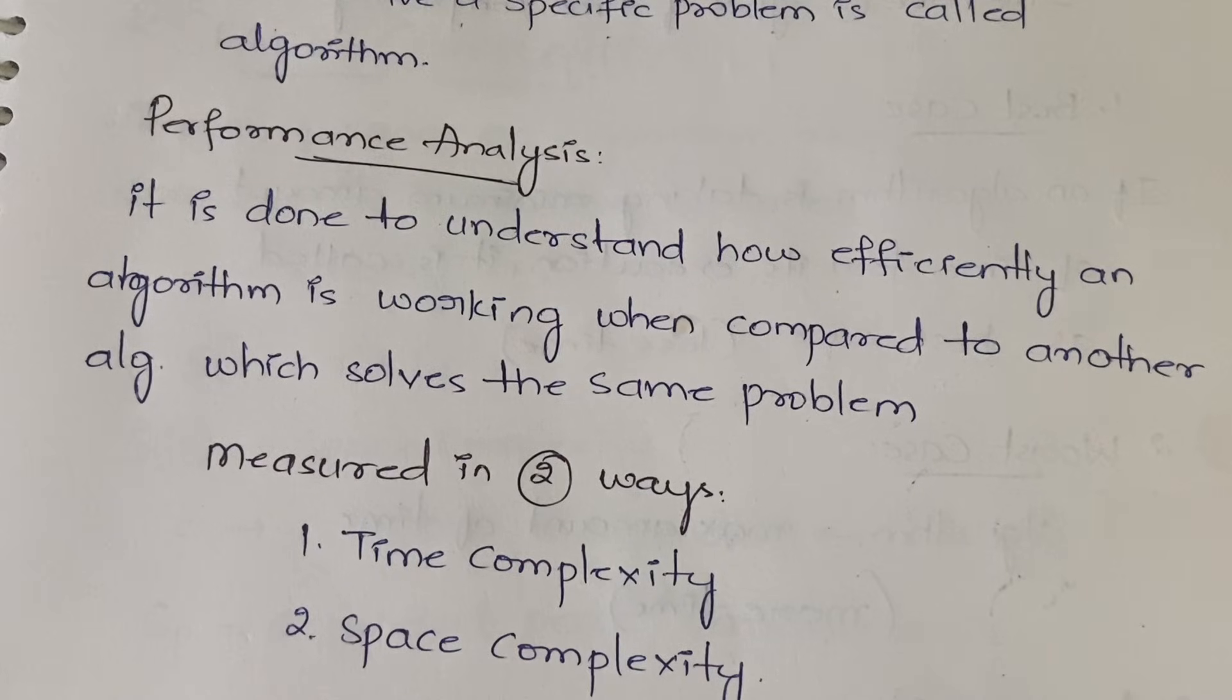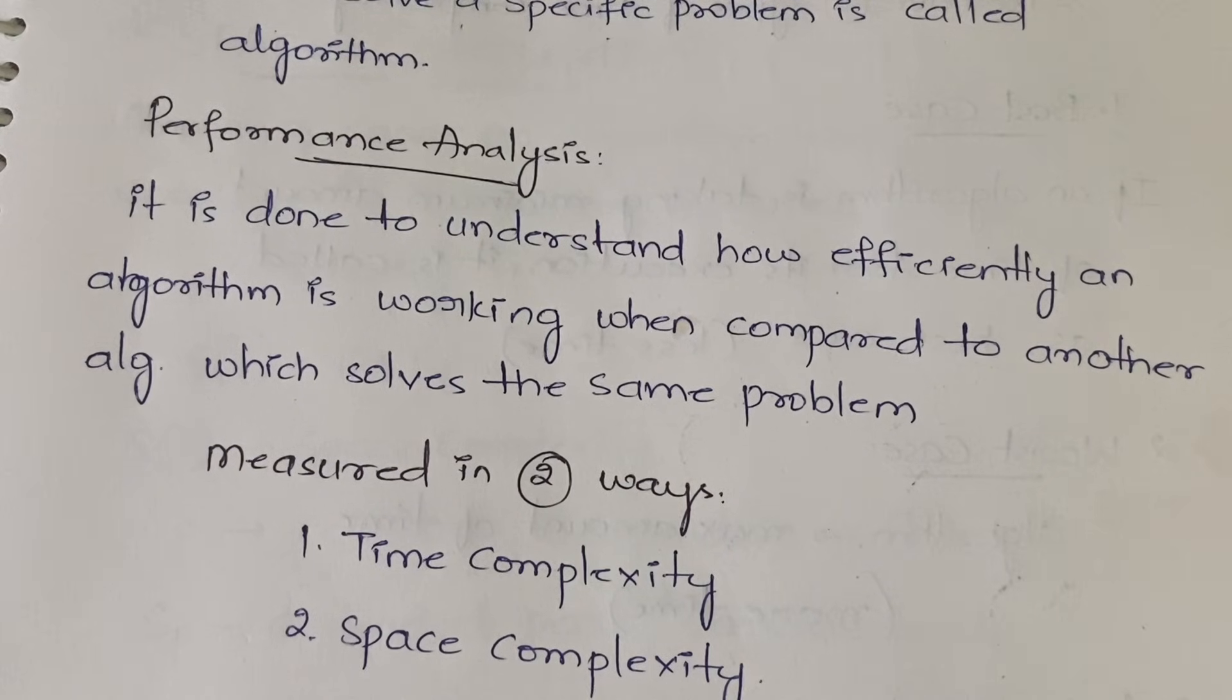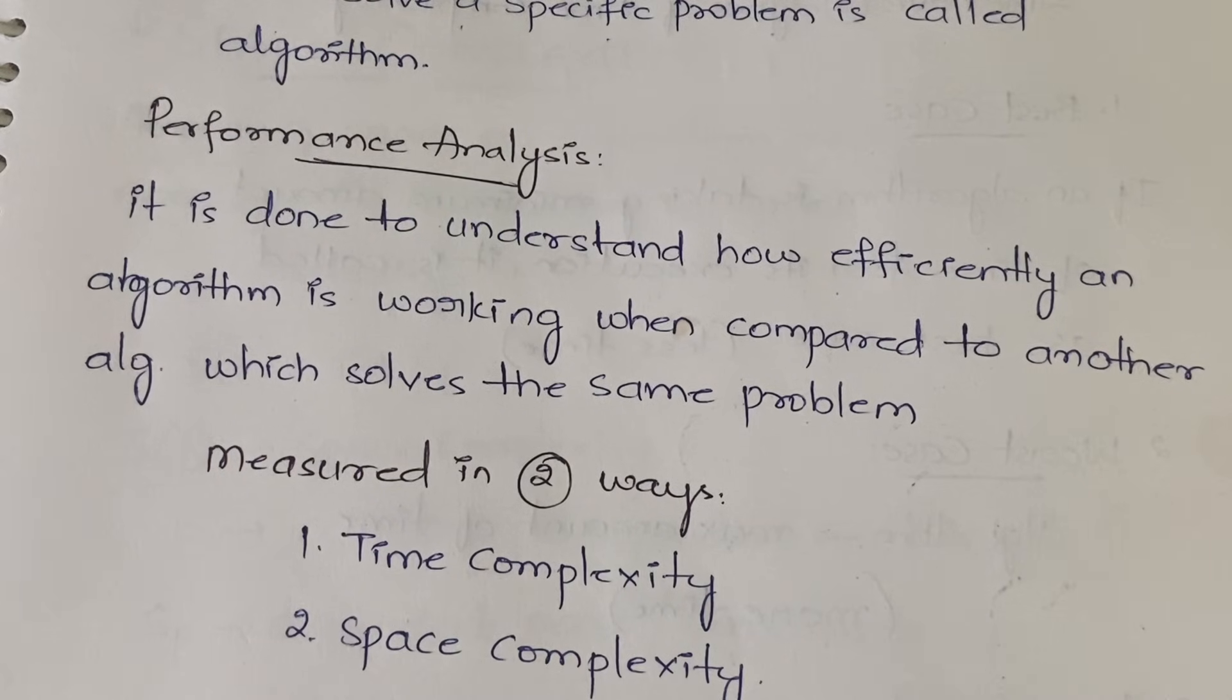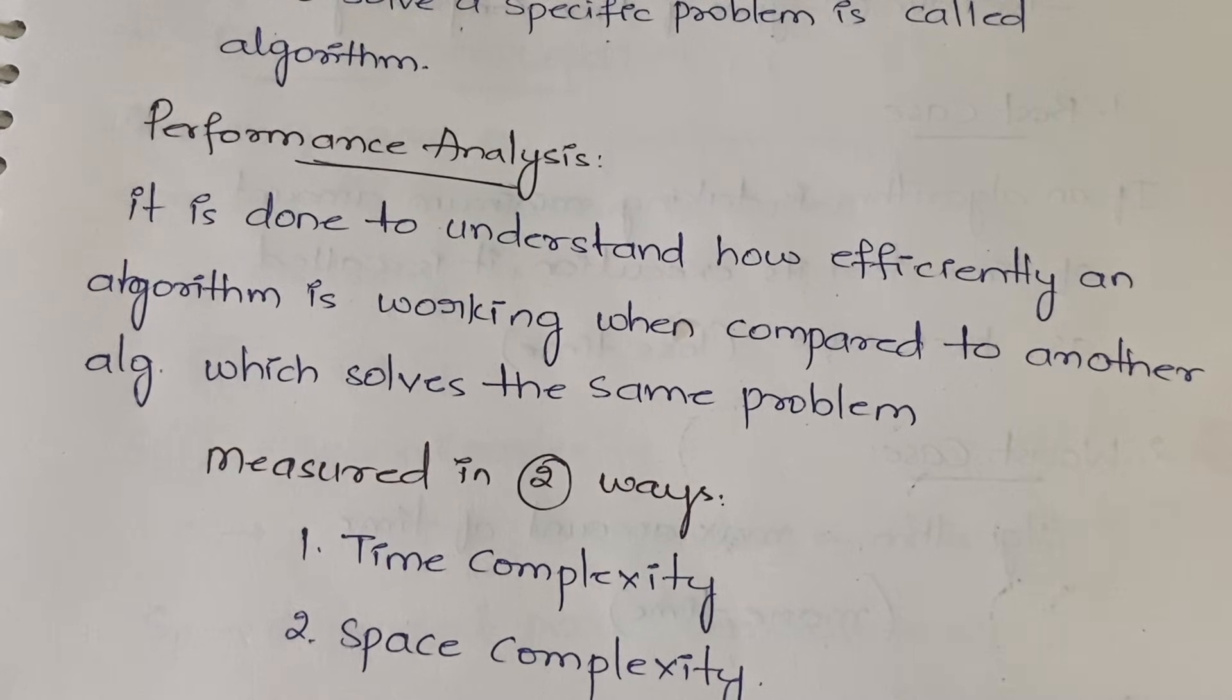If one bike is giving you 30 kilometers per liter mileage, and the other bike is giving you 35 kilometers per liter, then which bike will you choose? Obviously the one which gives 35 kilometers per liter, right? Why? Because it is having more efficiency. Since it is having more efficiency, you will obviously go for the one which is giving 35 kilometers per liter.